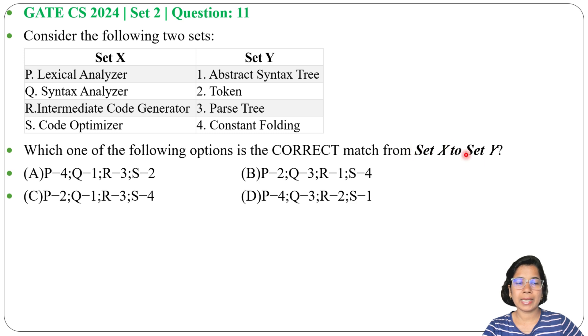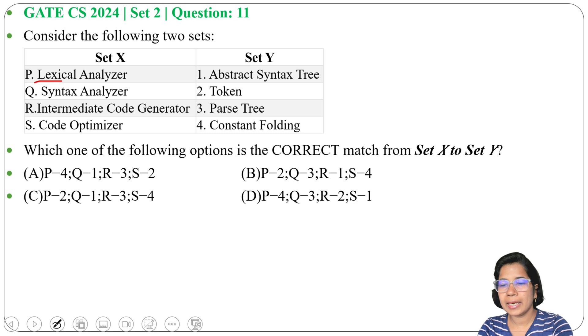Four options are given. Now from Set X, P is Lexical Analyzer. Lexical analyzer gives the token, so P matches with 2 in option B and option C.